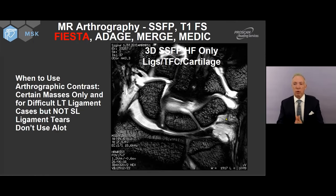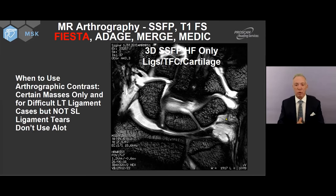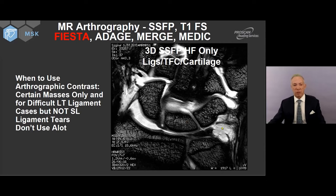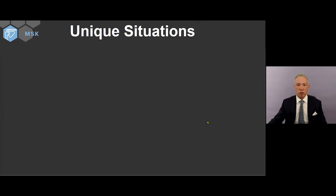A related sequence to the gradient echo sequences is steady state free precession, also known as FIESTA. This sequence gives heavy water weighting and is very robust, allowing you to get the field of view down to around 5-7 with 1 to 1.2 millimeter slices. Look at the band-like portion of the scapholunate ligament — gorgeous. The radial collateral ligament, the lunato-triquetral ligament, which is intact, and some tearing in the periphery of the TFC are all visible. I'm showing this for technique, not necessarily for pathology just yet.